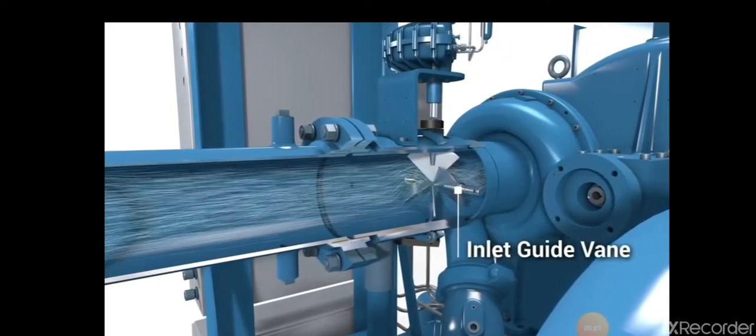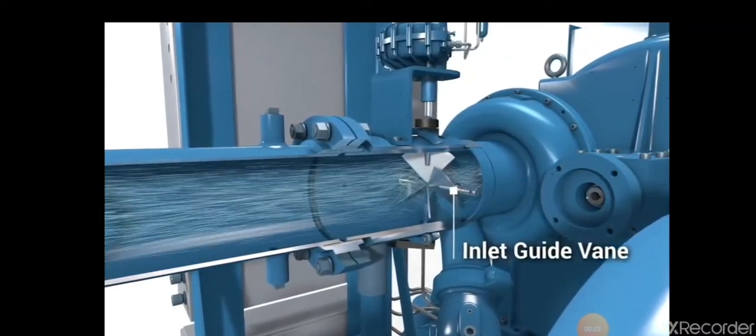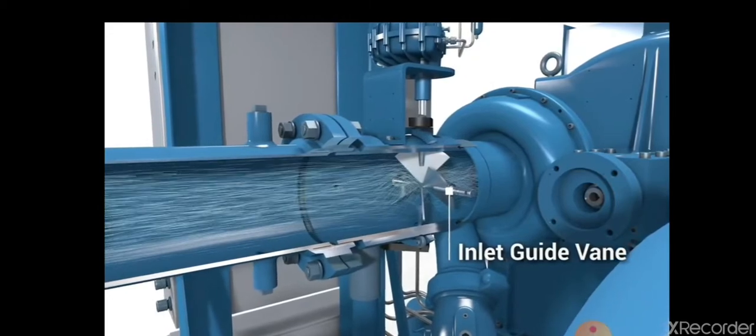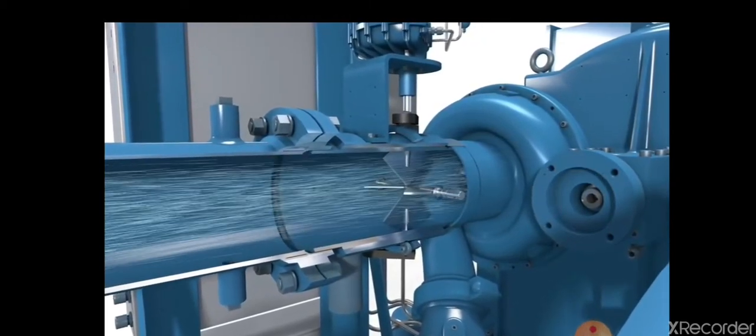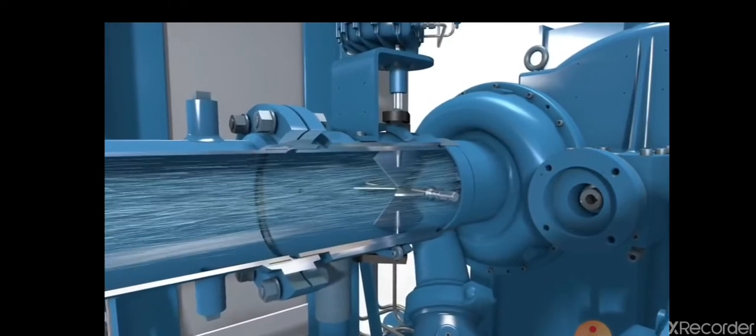From there, an inlet guide vane automatically adjusts itself to changes in system demand, regulating the incoming low-velocity air or gas stream as it flows toward the first-stage impeller with a pre-swirl effect.